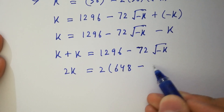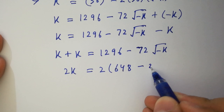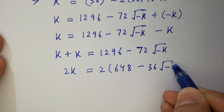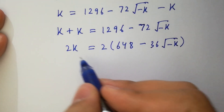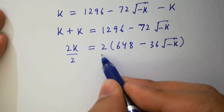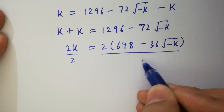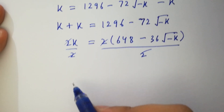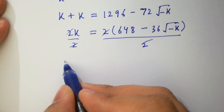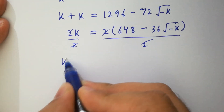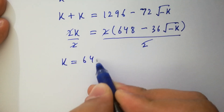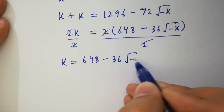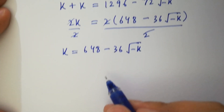We can divide by 2 on both sides. The 2s cancel, and we have k equal to 648 minus 36 times square root of minus k.